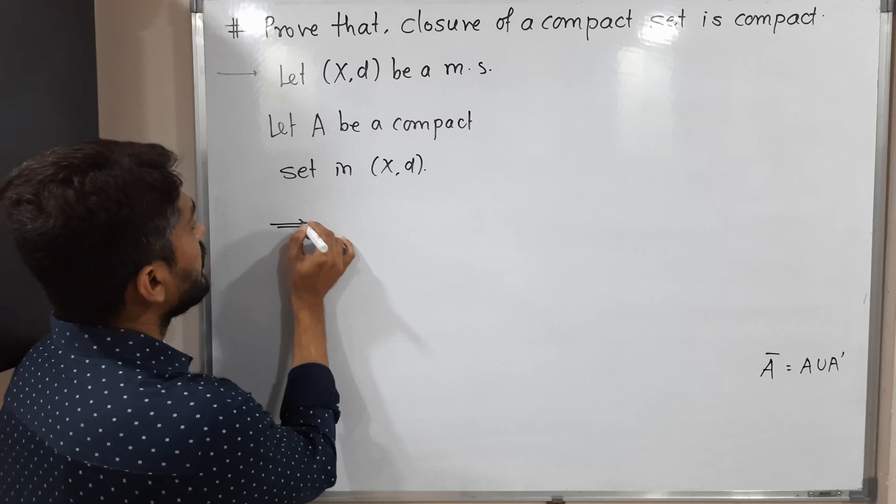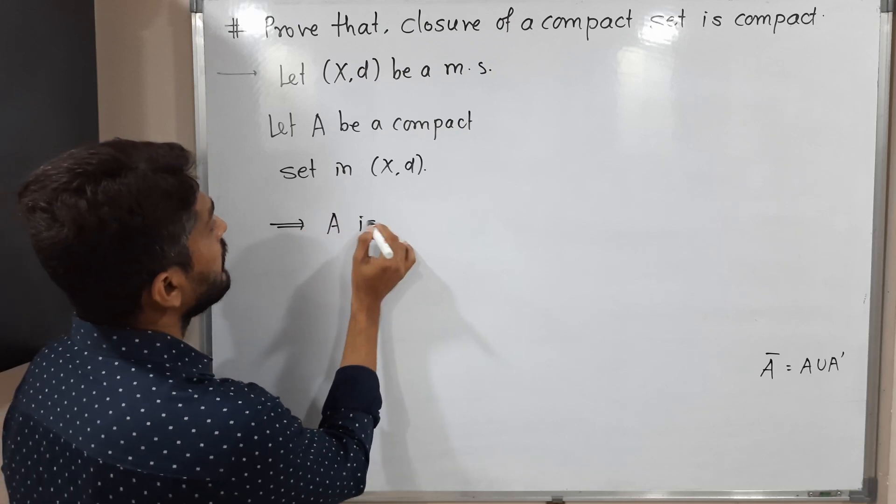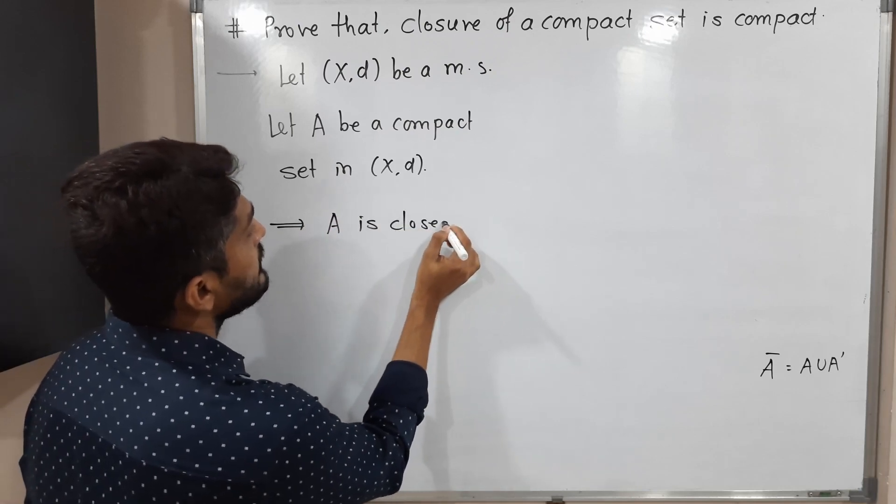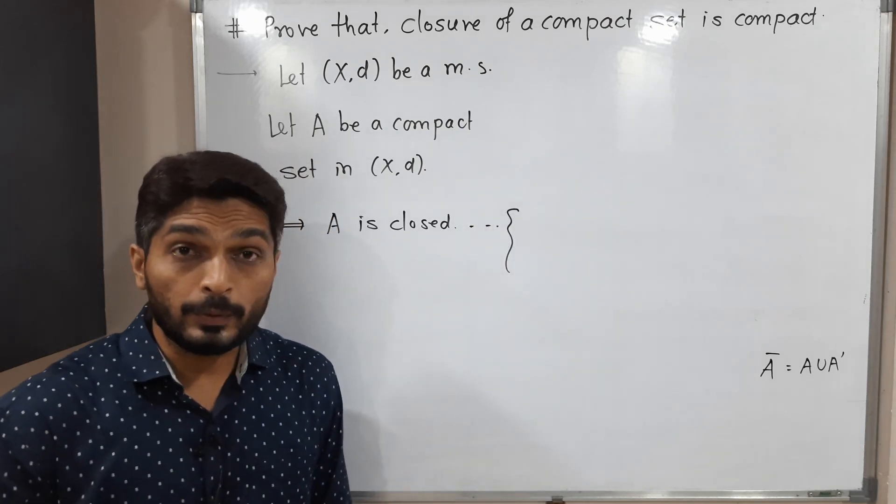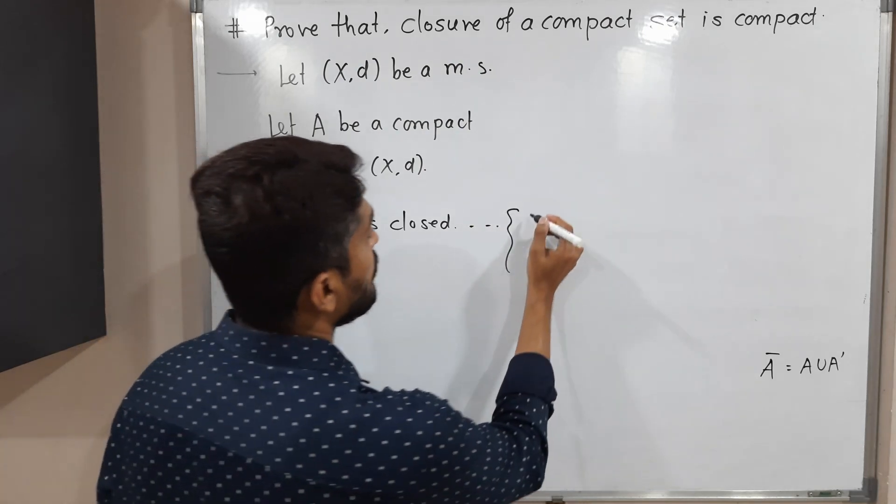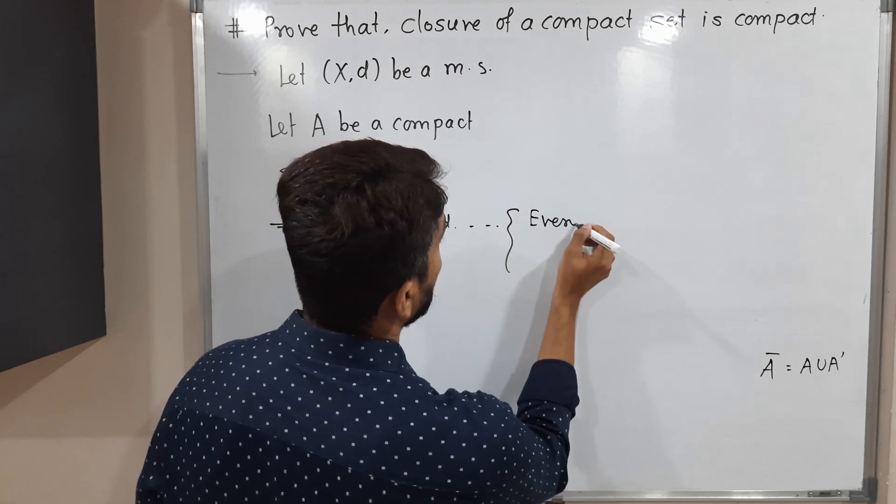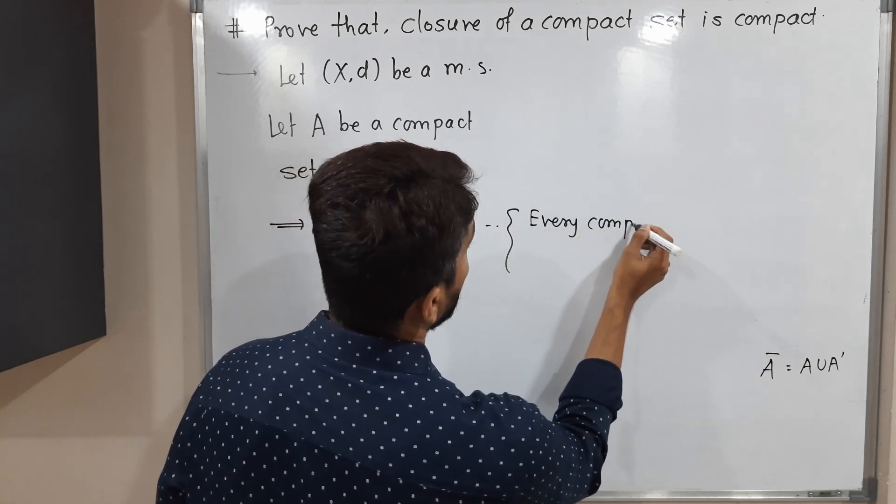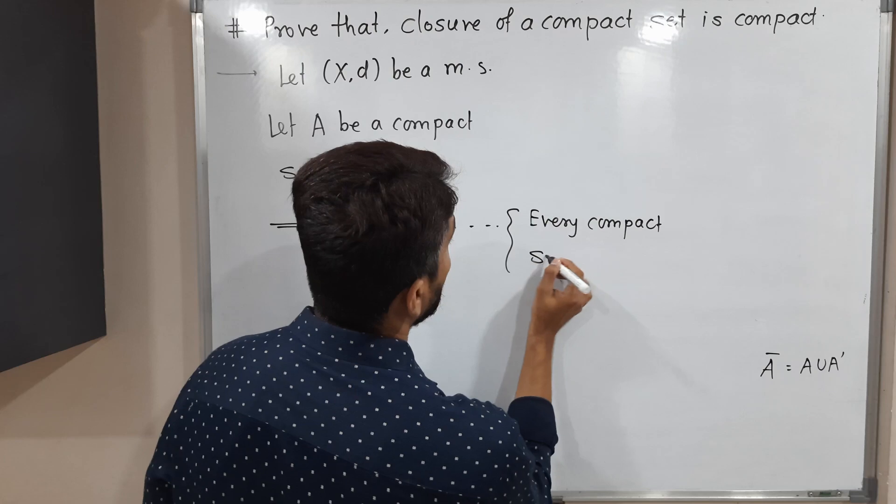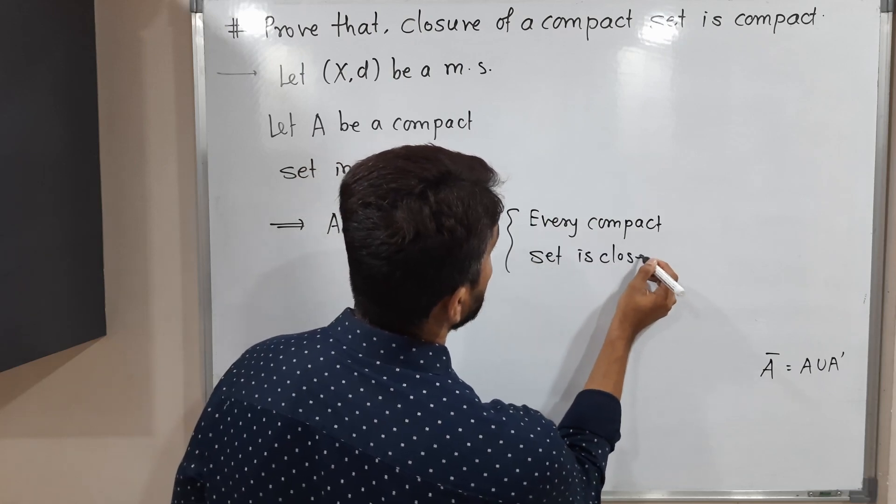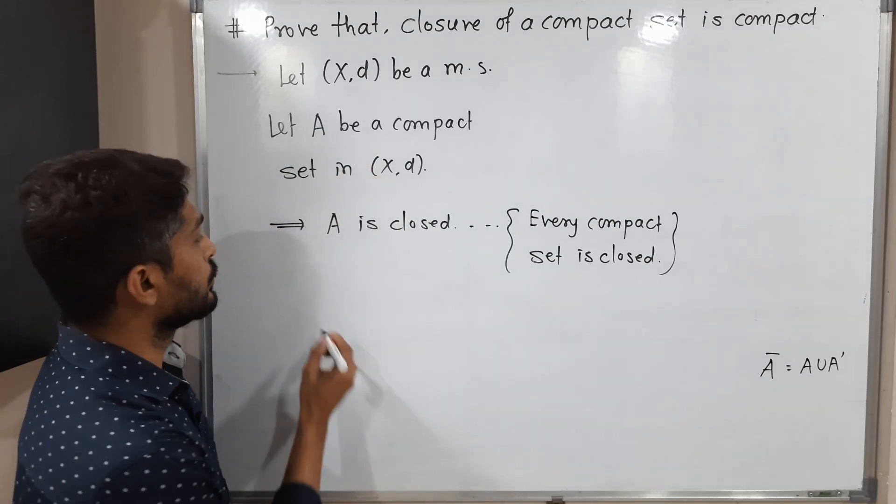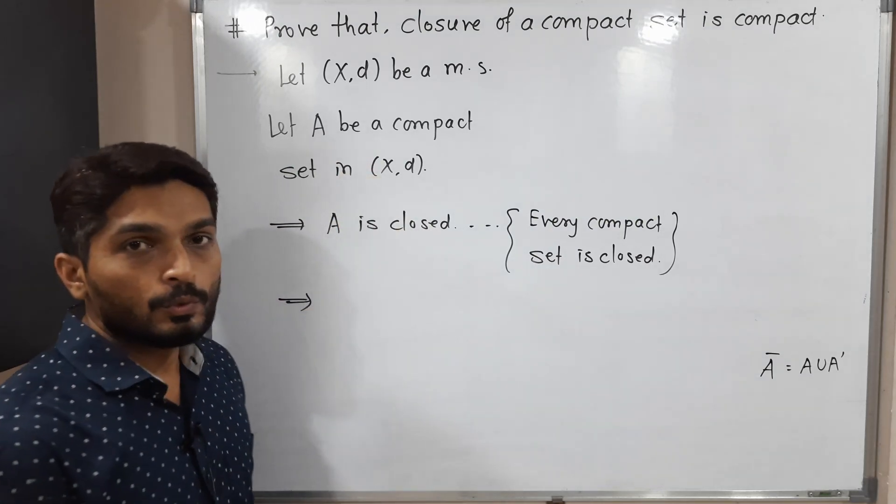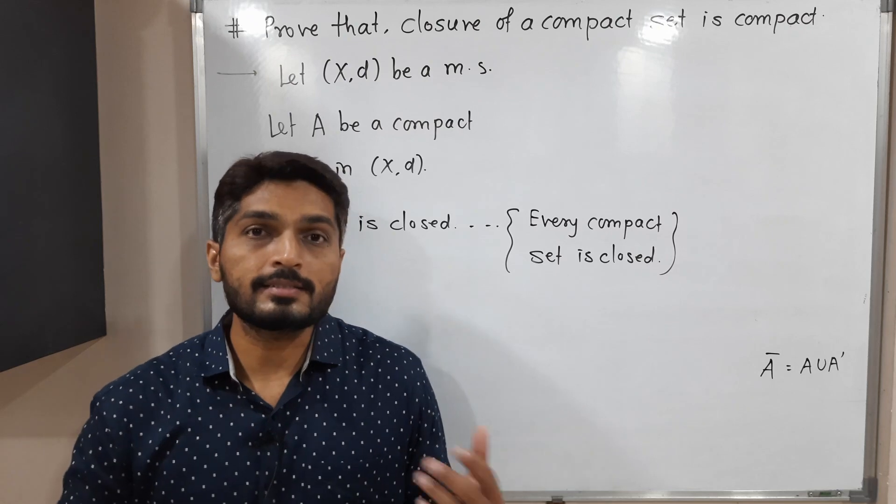A implies we can write A is closed. See, in previous videos we have already covered one result that every compact set is closed. So using this result, we can write: if set A is compact, then it is closed.